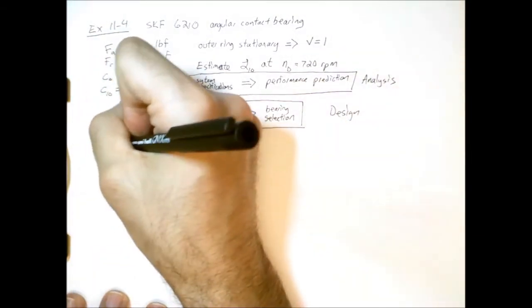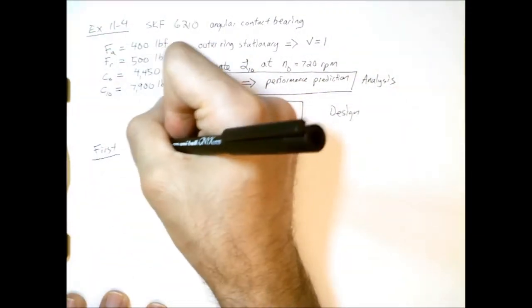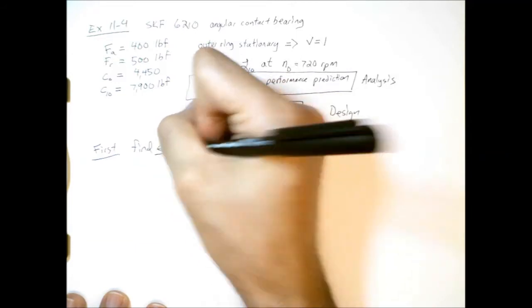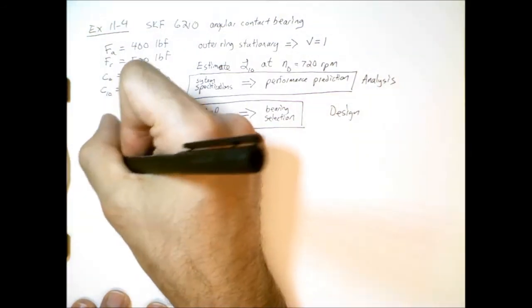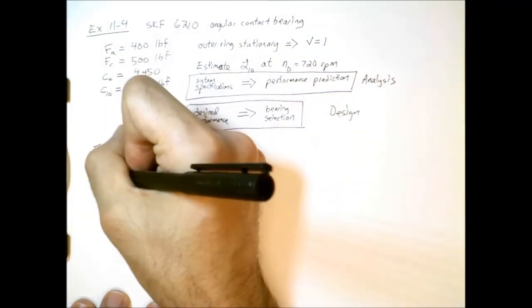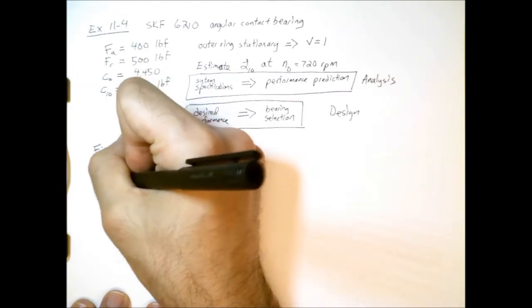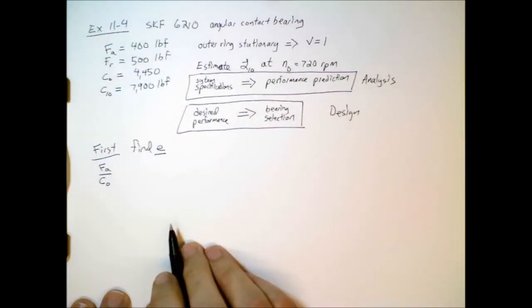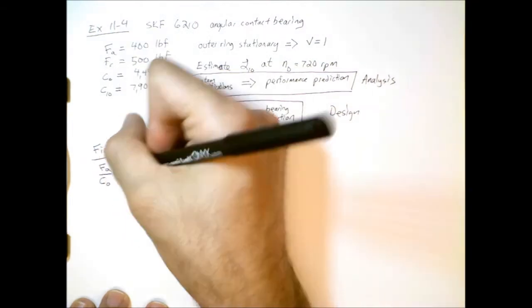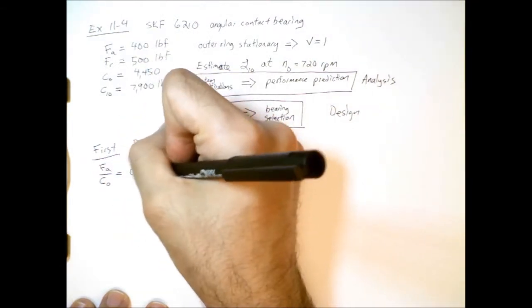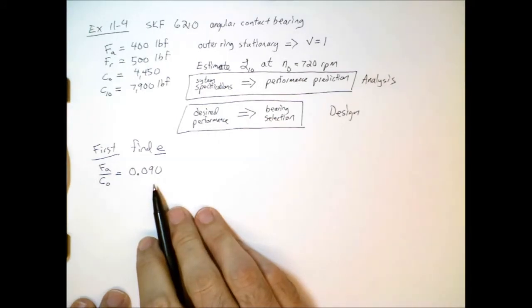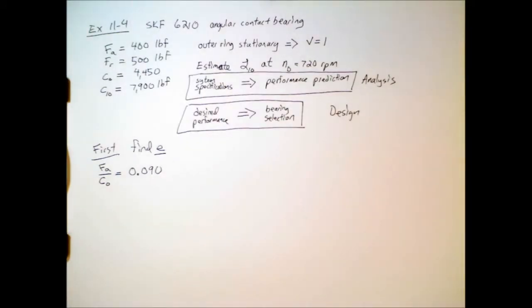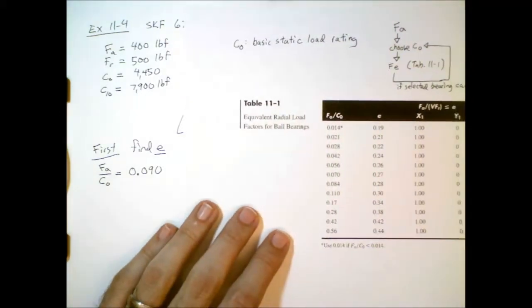So first step, find the threshold value E. So how do we do that? Well, first we need to know what is this ratio, axial load divided by the basic static load rating. Well, we know both of those. That's easy to calculate. So 0.090. So now we go to the table, table 11-1, and see where this lies.